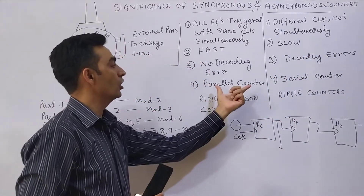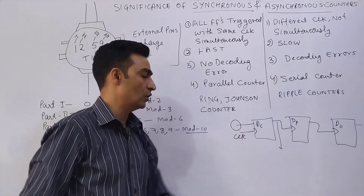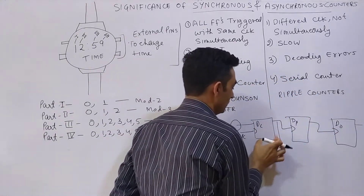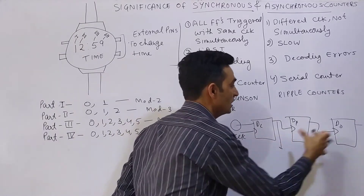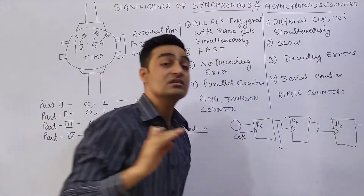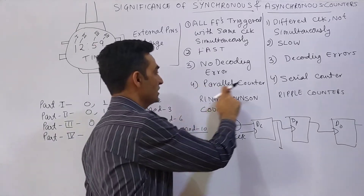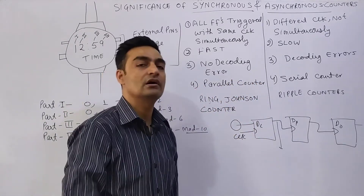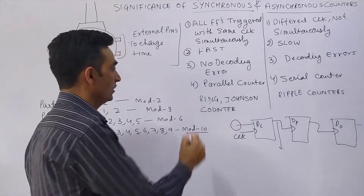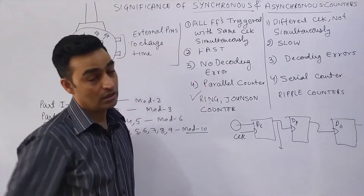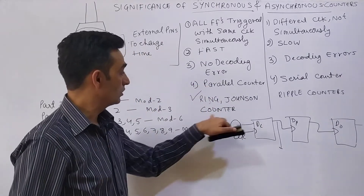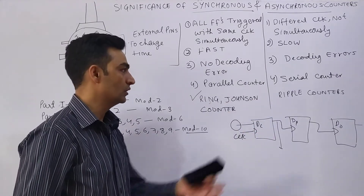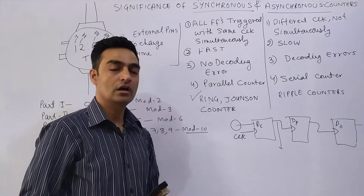Synchronous Counters are called parallel counters, and Asynchronous Counters are called serial counters, because in Asynchronous Counters the output is generated serially — first one flip-flop, then the next, then the next. But in Synchronous Counters, all flip-flops connected in the circuit generate output with the same clock simultaneously. Examples of Synchronous Counters include the ring counter and Johnson counter (also called twisted ring counter), while the ripple counter is an example of an Asynchronous Counter.